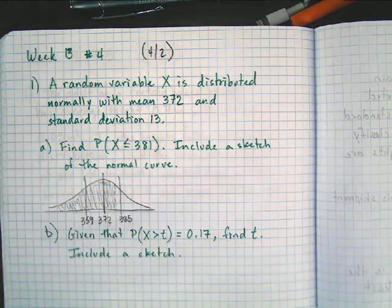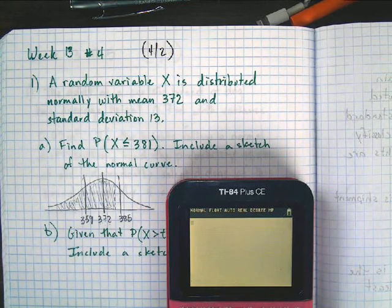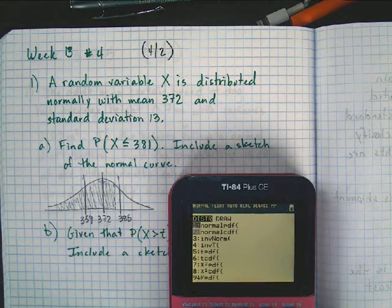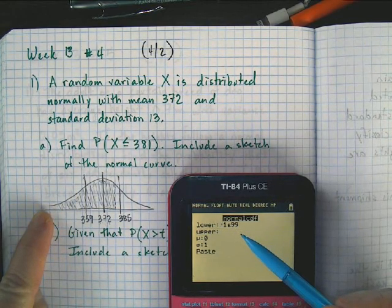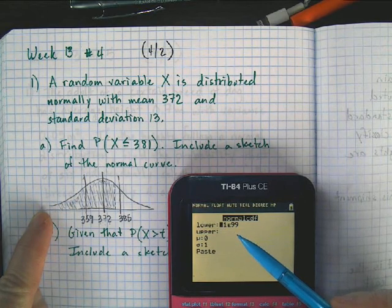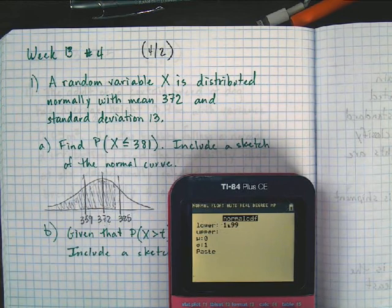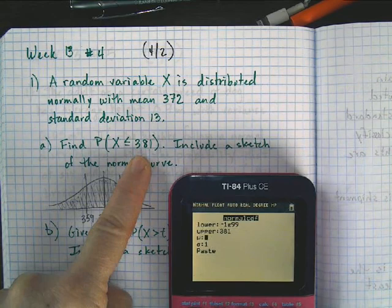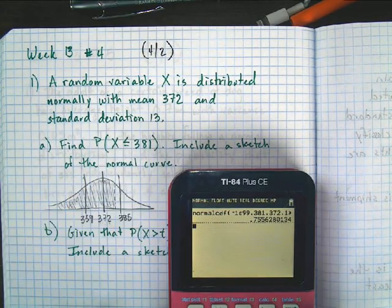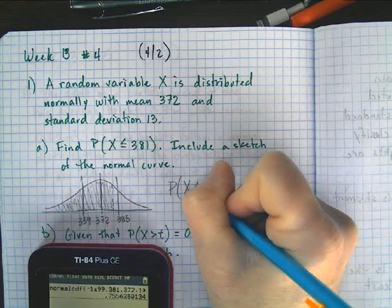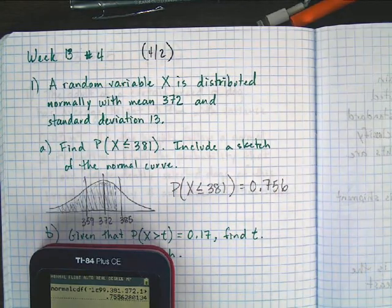So now we're ready to use our calculator. I'm not going to do the inverse, we've been practicing inverse, but we're going to do just a normal distribution, option number two. My lower limit, it goes forever to the left, so I want a really big negative number. Negative 1e99, or you can just put in negative a million, it works. The upper limit is going to be that 381. My mean is 372, and my standard deviation is 13. Hit enter a bunch of times, and we get our answer. The probability that we will choose 381 or less is equal to 0.756, or 75.6%.